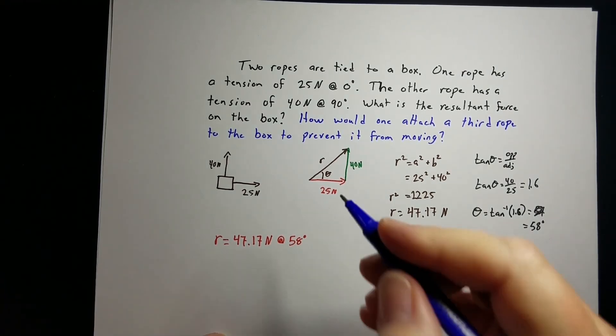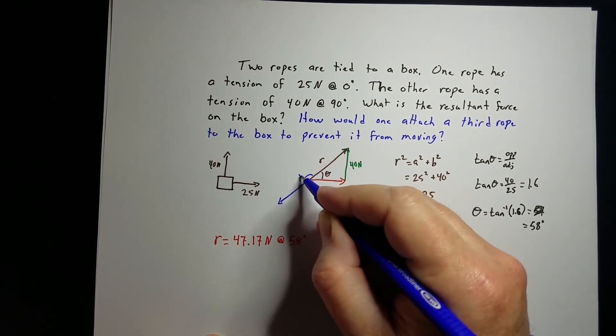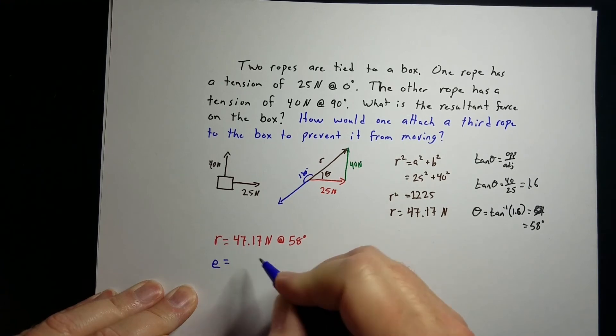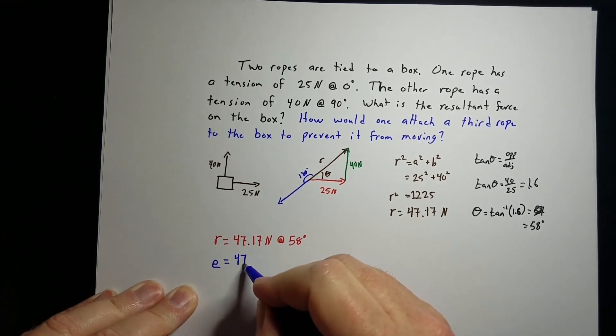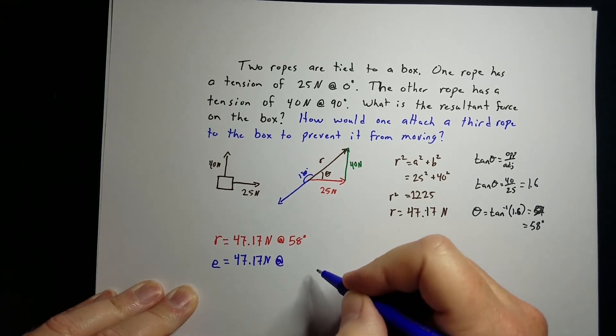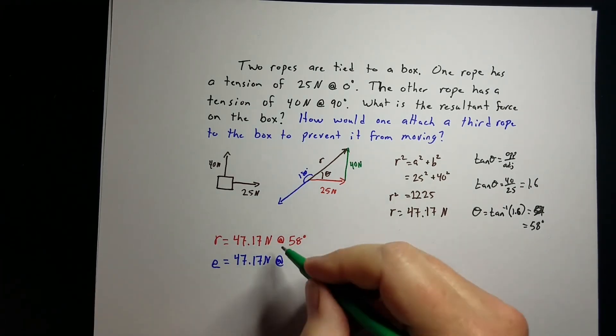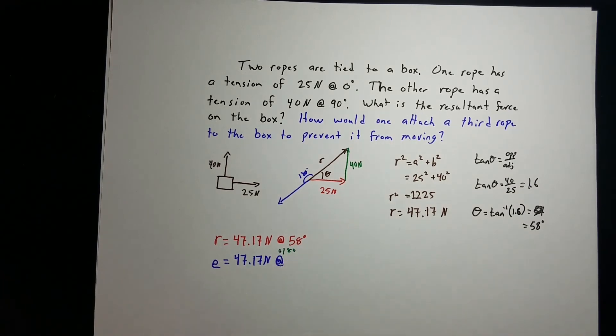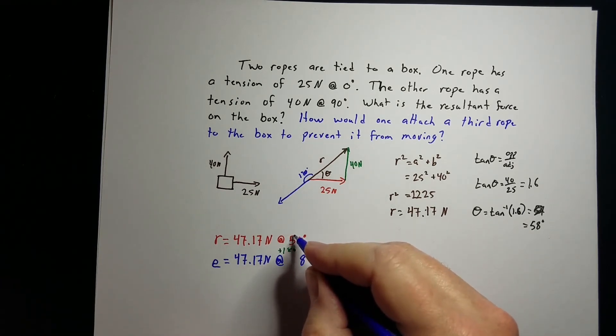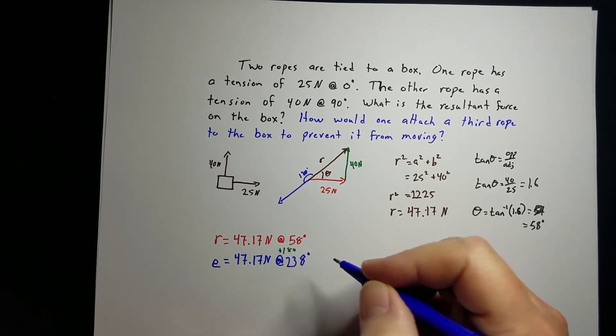Now, the equilibriant would be in this direction - another 180 degrees but same magnitude. To figure out the equilibriant, it's really quite easy after you got to this point. It's going to be the same magnitude, but we're going to add 180 degrees to the angle. If we add that in plus 180, we get 238 degrees. That would be the equilibriant.